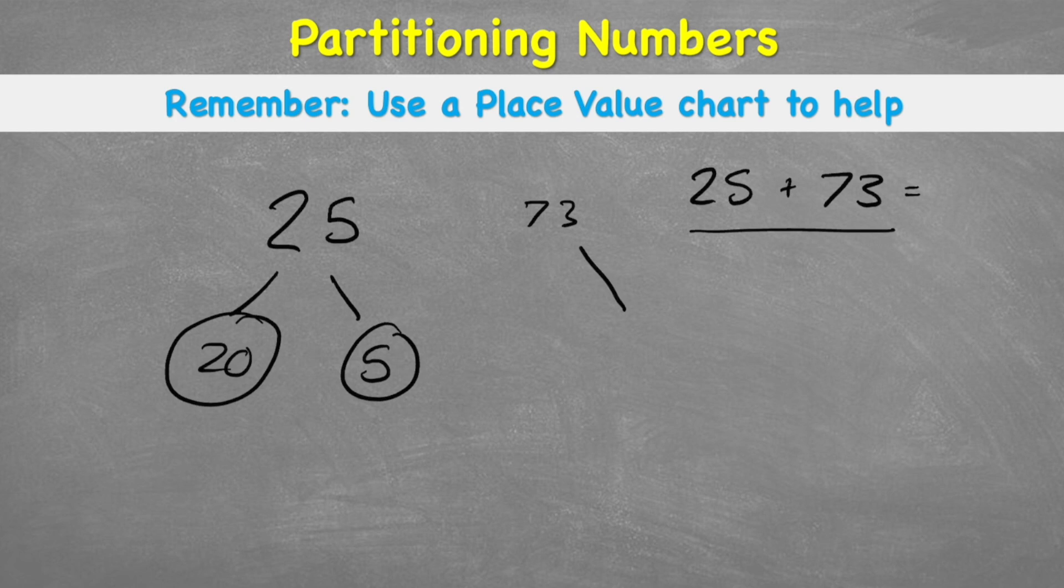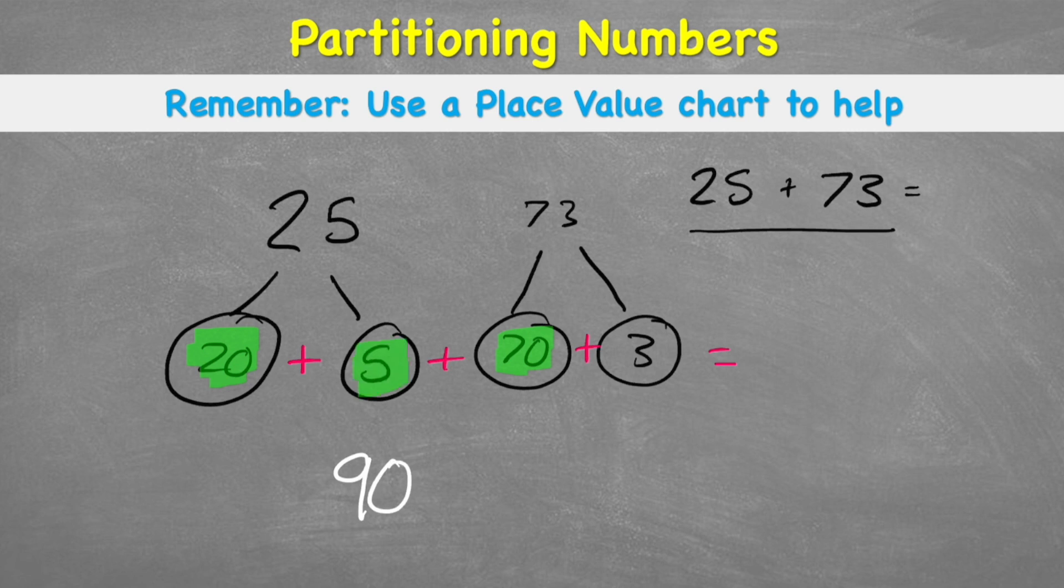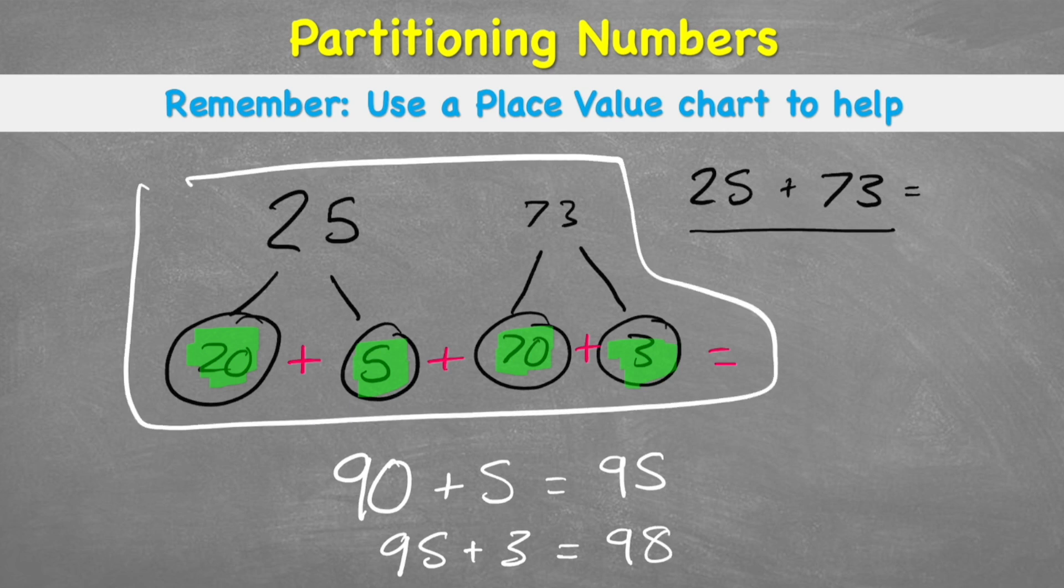So I could get my 73. And I can remember that that is now a 3 and a 70. And now, all I would need to do is add these numbers together, which would be much easier. And I'm going to do this in a strategy. I'm going to add my 20 to my 70. That equals 90. Then I'll add my 5. That equals 95. Then I'll get my 95. And I'll finally add my 3. And that equals 98.